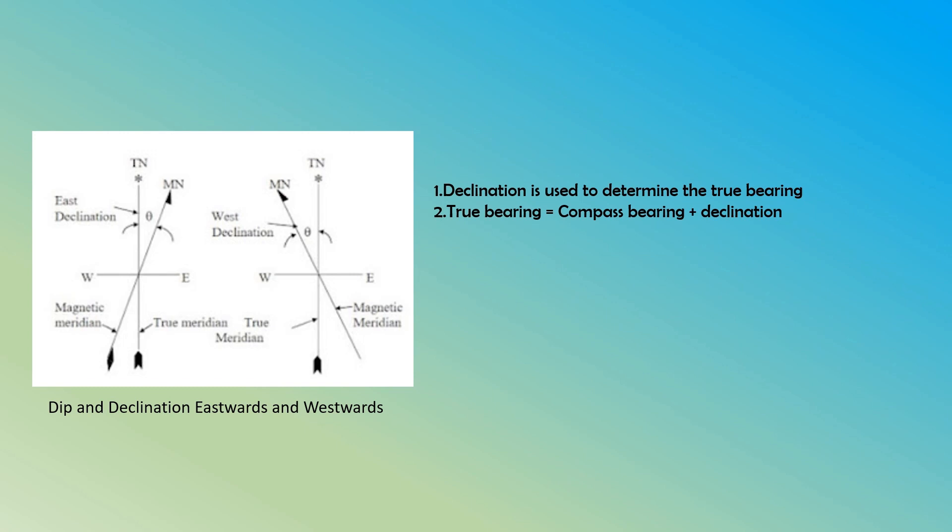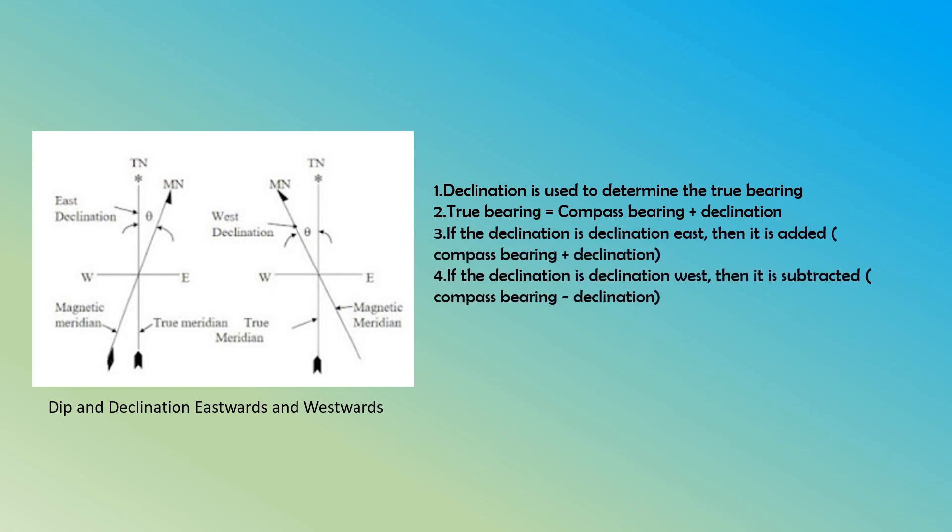Magnetic bearings are useful in areas where magnetic instruments are readily available, as they provide a convenient and practical method for determining directions.